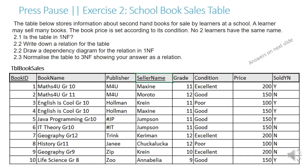Next exercise: a school book sales table. The table stores information about second-hand books for sale by learners at a school. A learner may sell many books. The book price is set according to its condition, and no two learners have the same name. Is the table in 1NF? Write down a relation for the table, draw a dependency diagram for the relation in 1NF, and then normalize the table to 3NF showing your answer as a relation. You can pause now and try the exercise before looking at the answers.